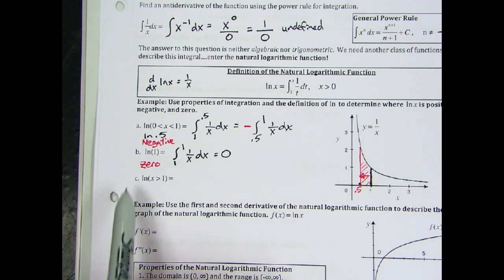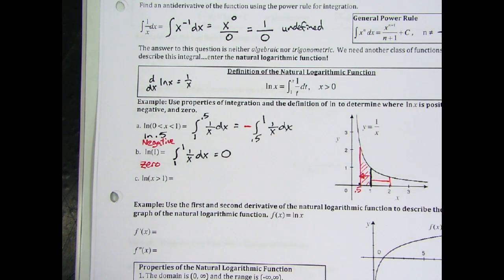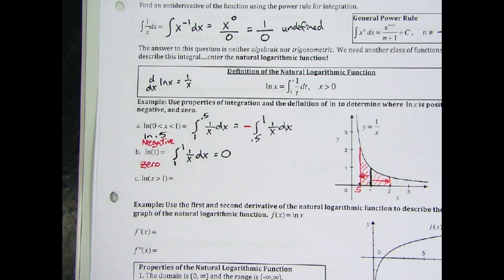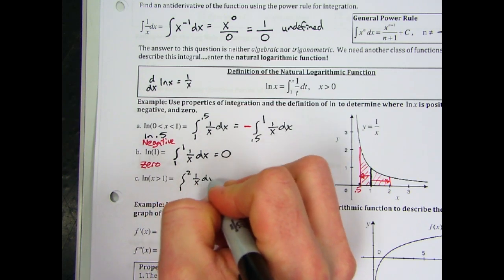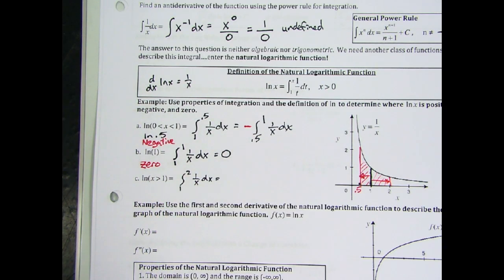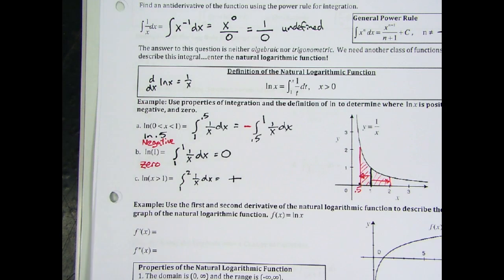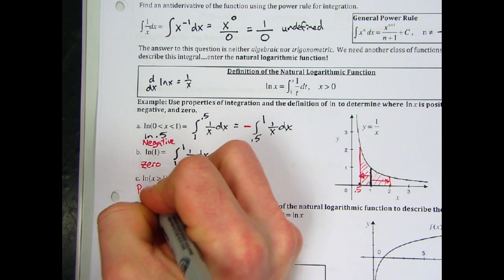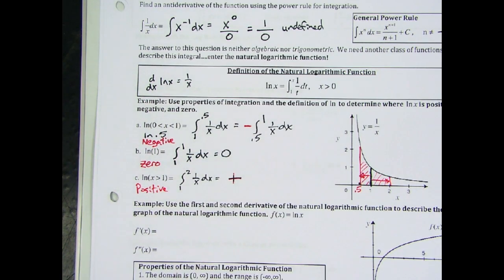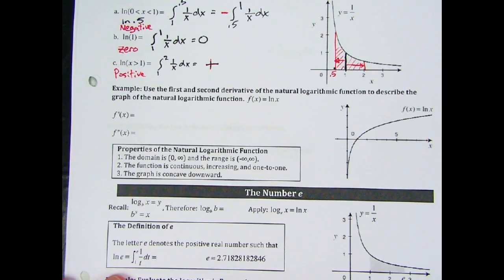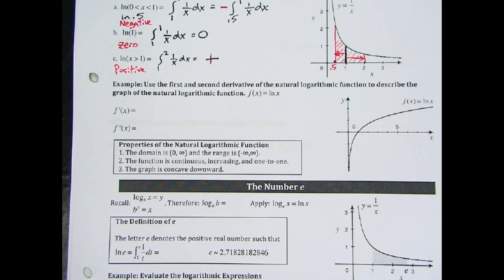How about natural log of something greater than 1? It's going to be positive. You can see that simply: if we go to 2, using the definition from 1 to 2, we are going to get a positive number.